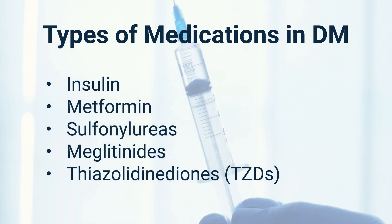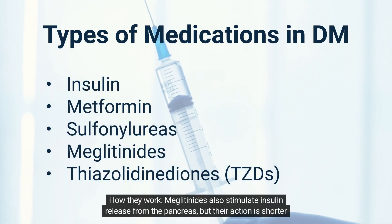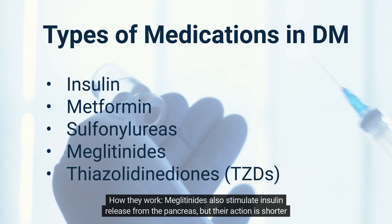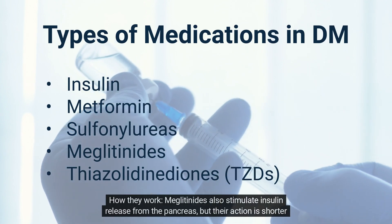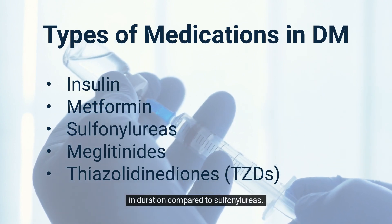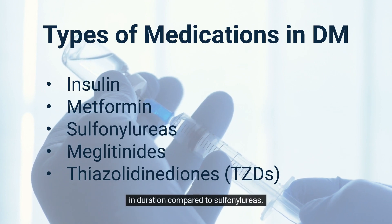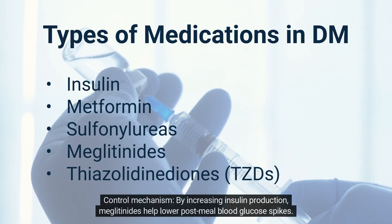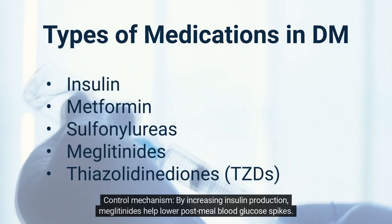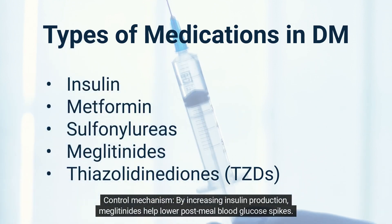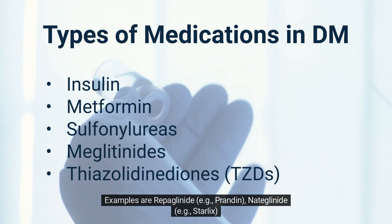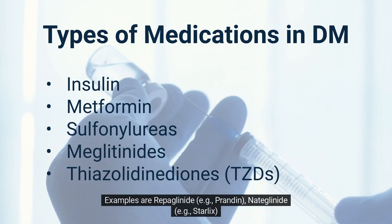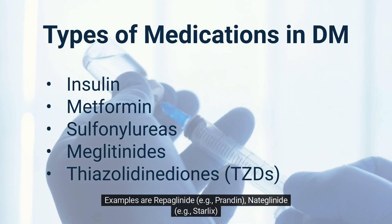Meglitinides also stimulate insulin release from the pancreas, but their action is shorter in duration compared to sulfonylureas. By increasing insulin production, meglitinides help lower post-meal blood glucose spikes. Examples are repaglinide (Prandin) and nateglinide (Starlix).